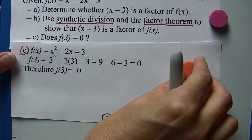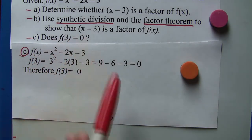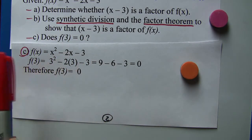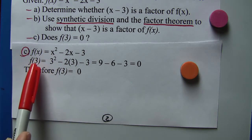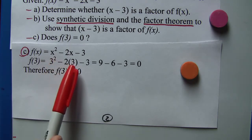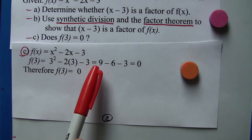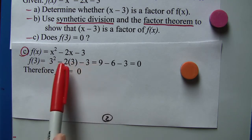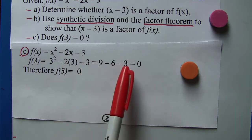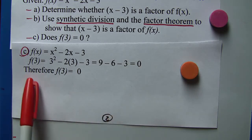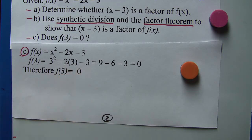So for part c, does f(3) = 0? Well, another way to do this is we take our function, and wherever we see the x, we're going to put a 3 in. So 3² - 2(3) - 3, well that equals, let's see, 3² is 9, 2 times 3 is 6 with a negative sign out front, and then there's the -3. We combine those to get 0. Therefore f(3) = 0.